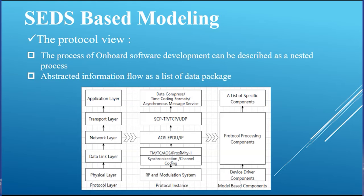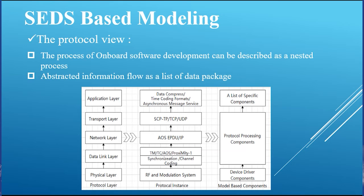In order to effectively model the information provided by the spacecraft electronic datasheet, we observe it through three views. The first view is the protocol view. The process of onboard software development can be described as a nested process, while the process of data processing by the test system can be modeled as a de-nesting process. The figure in this slide describes the correspondence between protocol and component model. From the figure, we can see that the protocol is depicted in five levels, and accordingly the components are divided into three categories.